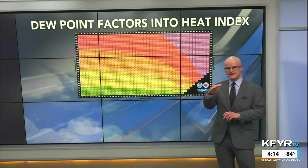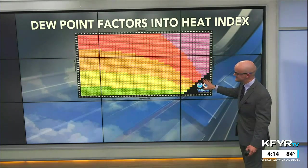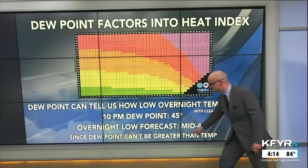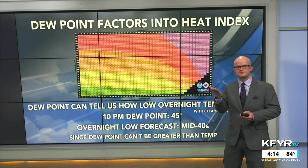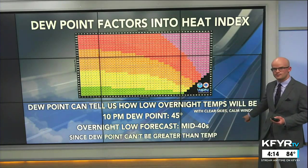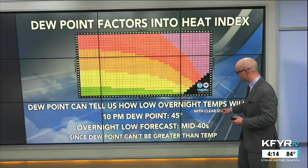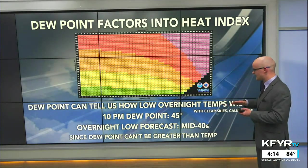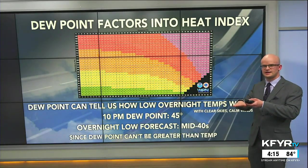Dew point is very useful for determining how muggy it is outside, and it also factors into the heat index. Dew point can tell us how low overnight temperatures will be, because dew point can't be greater than temperature. So with a 10 PM dew point of 45 degrees, clear skies, and calm winds providing good radiational cooling, the overnight low forecast will be in the mid 40s — the temperature will get close to that dew point but can't fall below it.